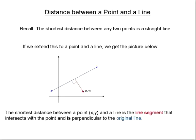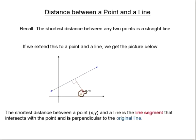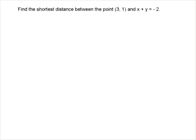We're going to extend this to a line and a point. If we have a straight line and we have a point, the shortest distance between them is this length right here. The key property to keep in mind: the shortest distance between a point (x, y) and a line is the line segment that intersects the point and is perpendicular — meaning 90 degrees — to the original line.